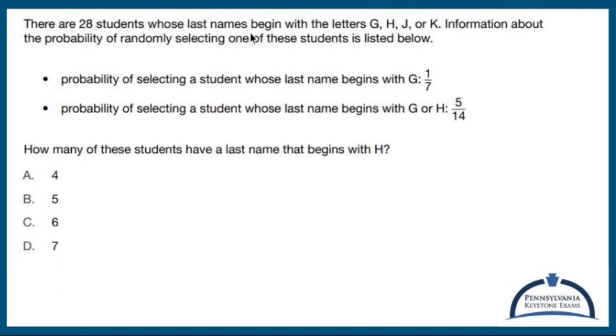There are 28 students whose last name begins with the letters G, H, or J, or K. Information about the probability of randomly selecting one of these students is listed below.